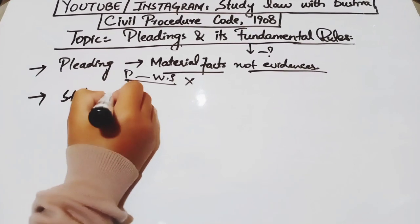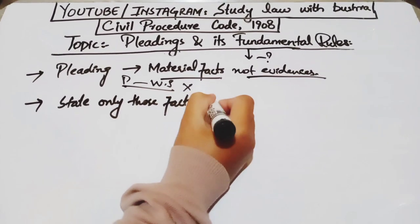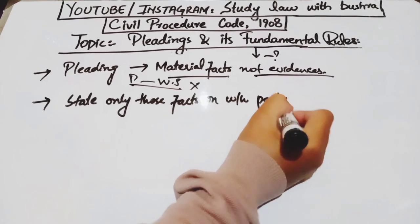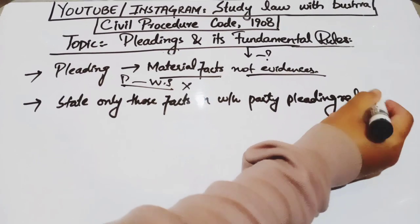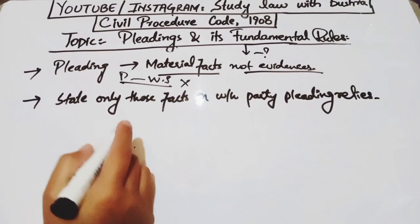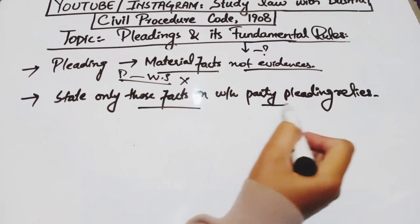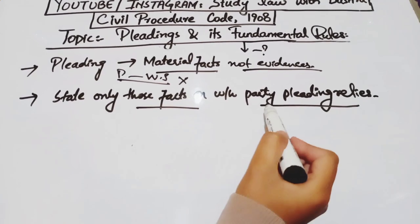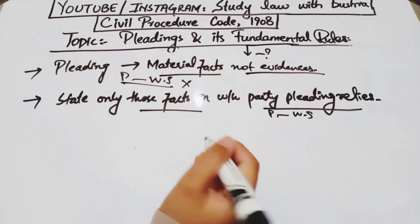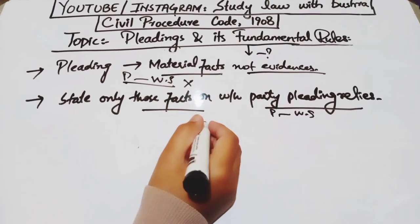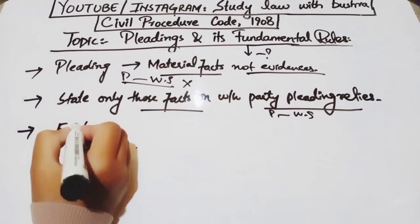The second rule is that the pleading must state only those facts on which the party pleading relies. That means inside the pleading, only those facts should be mentioned — those realities on which the party's pleading relies, on the basis of which a party is presenting its pleading in a court of law. So it should contain only relevant facts through which we can further prove our pleading in court.